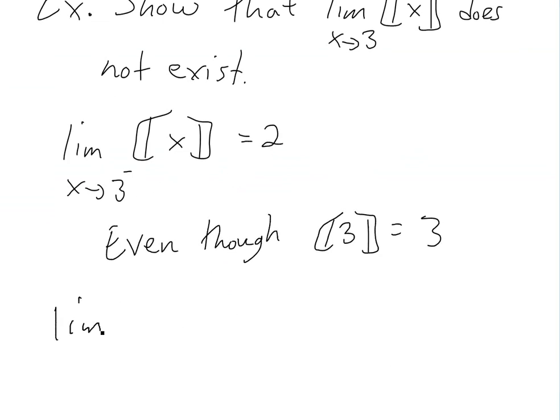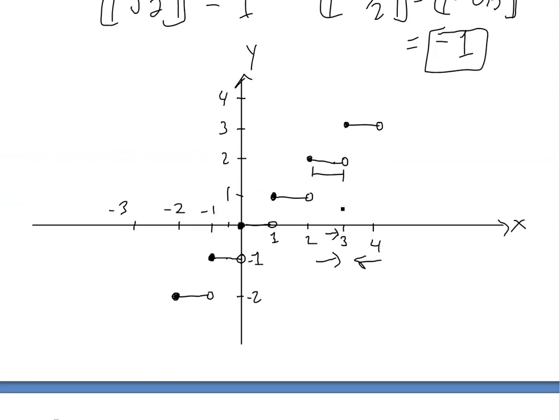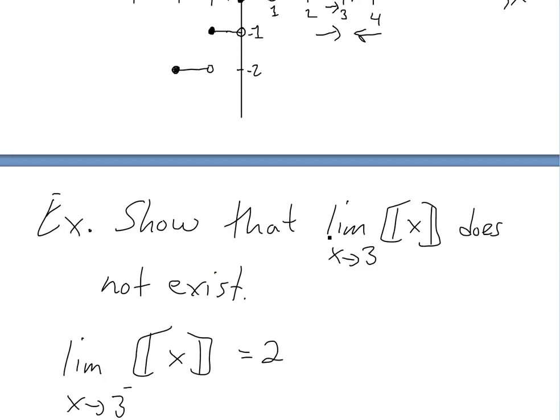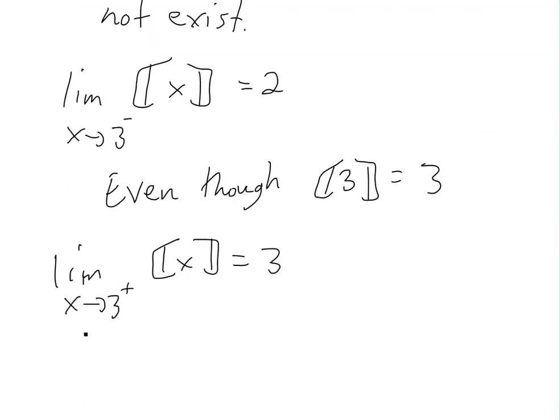And then if you go from the right side, you'll get 3 here. And that's just by looking at this right here. If you go from the right side of it, so let's say this value here, 3 point whatever, it's going to hit this, and you're going to go down to 3 here. So as you can see, the limit is 3 here. So the limit from both sides is not the same, thus the limit does not exist.